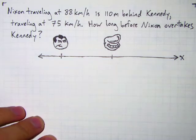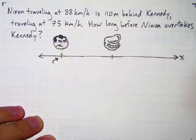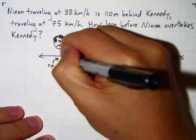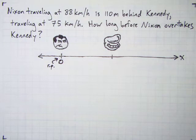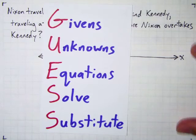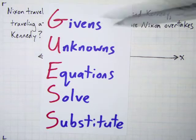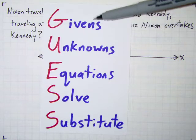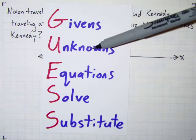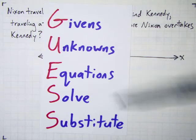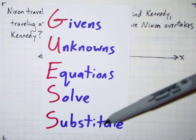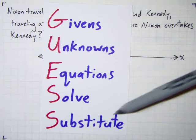We also need a reference point. Nixon's starting position will be our reference point — we'll call that a position of zero. To solve this problem, we structure our approach using a system called GUESS: Givens, stating the information given to you; Unknown, stating the variables you don't know; State the equations you're going to use; Solve those equations algebraically; and finally, last step, substitute in the actual numerical values. Save that for the end.